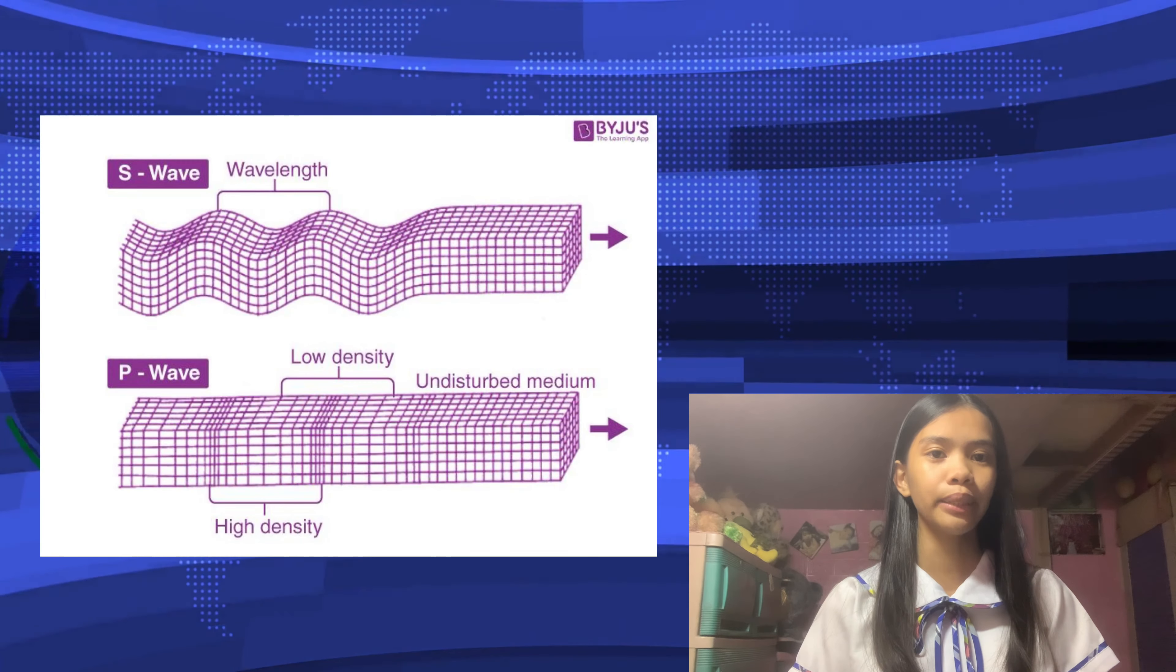This shaking can be felt on the surface where it can sometimes lead to significant damage, especially during powerful earthquakes. There are three primary types of seismic waves: P-waves, S-waves, and surface waves.